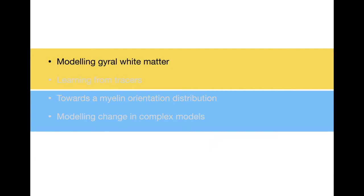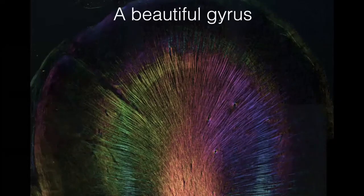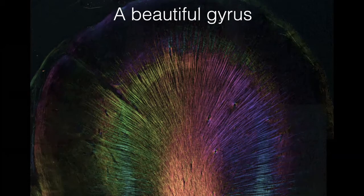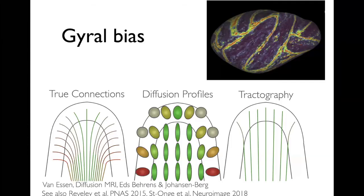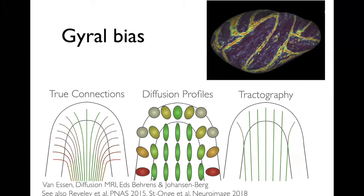Let's dive in to modeling gyral white matter. This is a picture of a gyrus in the human brain — it's polarized light imaging — and what you can see is that the fibers are doing what you expect them to do as they enter gray matter: it's not total chaos, but the fibers kind of gently turn into the cortex. In diffusion, we have something called the gyral bias, which means that our tractography algorithms favor connecting to the gyral crown more than to the walls of sulci. We think that is because the diffusion signal is dominated by fibers running along the gyrus.